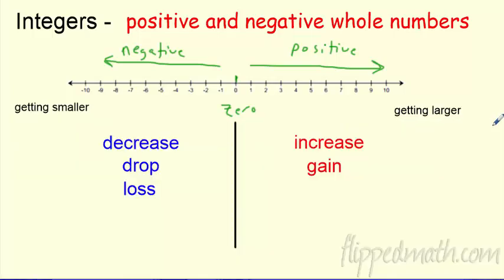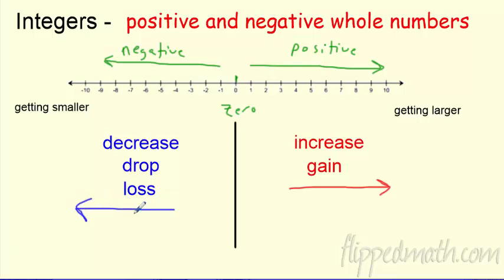Other things we've got to think about: if I'm going to the right or the positive direction, other things that mean positive are increase or gain. We're going to do some word problems where you have to really think about what's happening — oh, I'm adding. What about getting negative? A decrease, maybe a drop, a loss — things like this can mean you need to go in the negative direction. So there are positive and negative integers. Don't freak out when you see integer — it just means whole numbers, positive or negative.